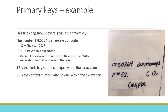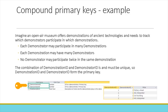Here's an example of primary keys in the natural world. This finds bag shows several possible primary keys. The number 17E0264 is the excavation code: 17 represents the year, E for excavation is only a separator, and 0264 is the excavation number — the 264th excavation granted a license in 2017. 52 is the finds bag number, unique within the domain of the excavation. 12 is the context number, also unique within the domain of the excavation.